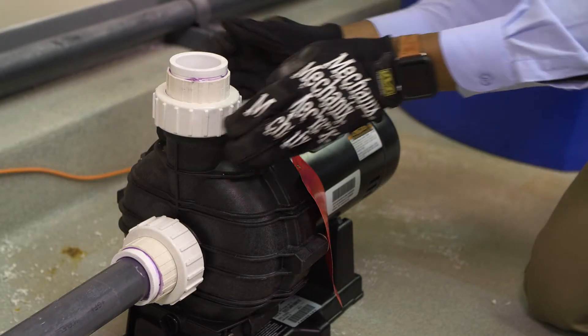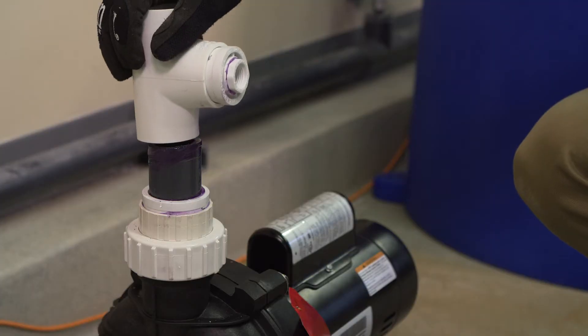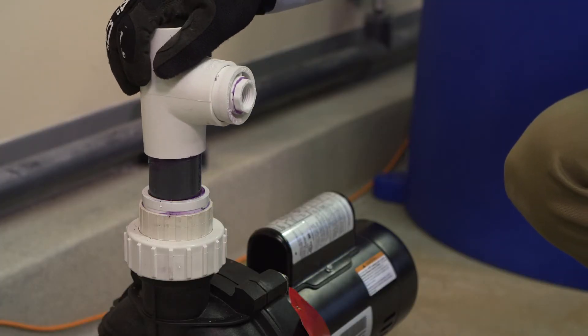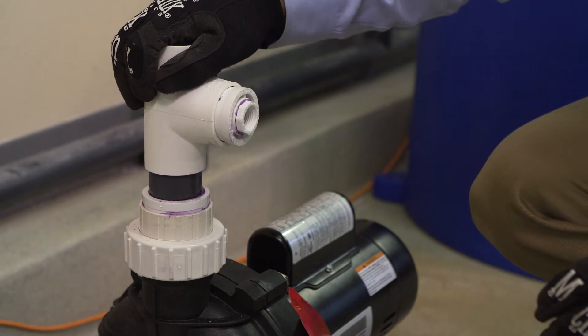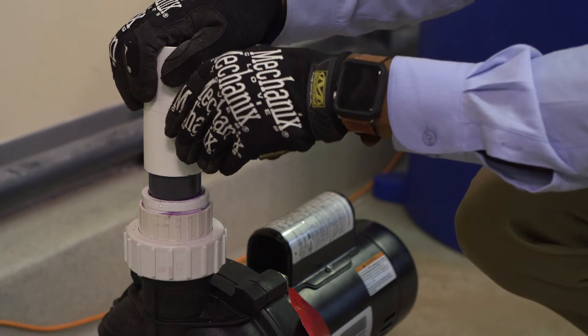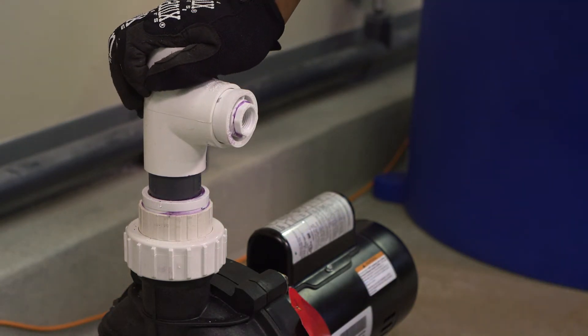Piping the discharge side of the pump will involve installing a Venturi and reducing T. Place and glue the 1.5-inch by 1.5-inch reducing T on the 1.5-inch cut nipple on the discharge side of the pump. This reducing T will have a 1.5-inch male tubing fitting screwed into it that will provide the inlet water to the feeder.